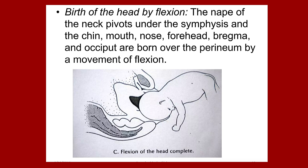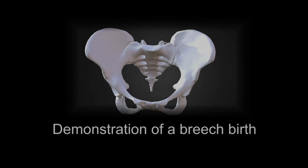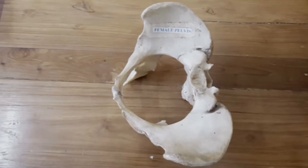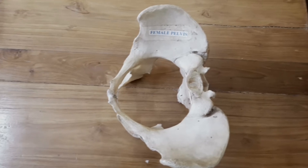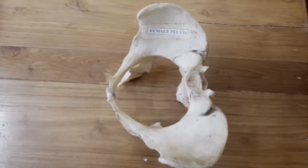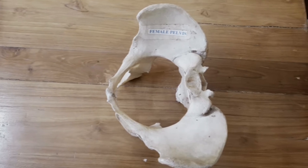We have completed the full cardinal movements in breech mechanism. For better understanding, I will now explain it with the help of a video. In this demonstration, the lie is longitudinal, the breech is in the lower pole of the uterus, presentation is breech, attitude is complete flexion, the engaging diameter is 10 centimeters, and the denominator is the sacrum.